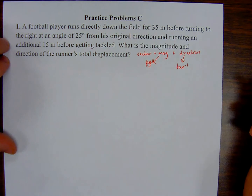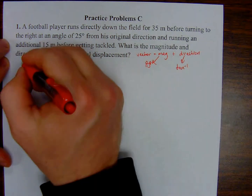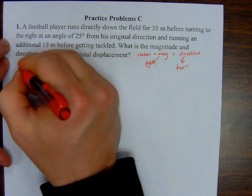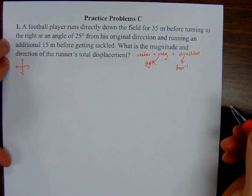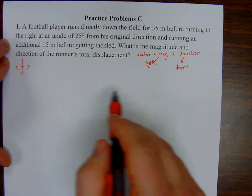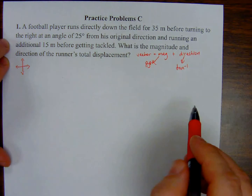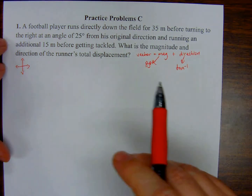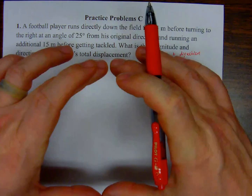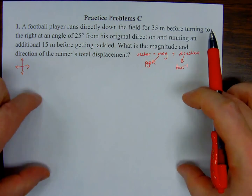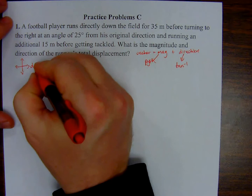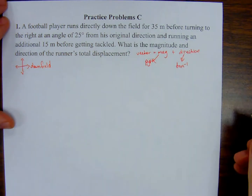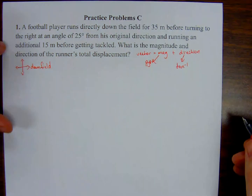Let's establish our coordinate system. Our directions are downfield and then right. You can picture the football field however you like — I picture it running horizontally with end zones on the sides. I'm going to say the positive x direction is downfield. That's going to be very important when I disclose my direction in the final answer.